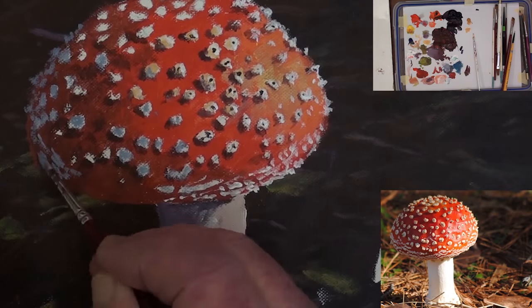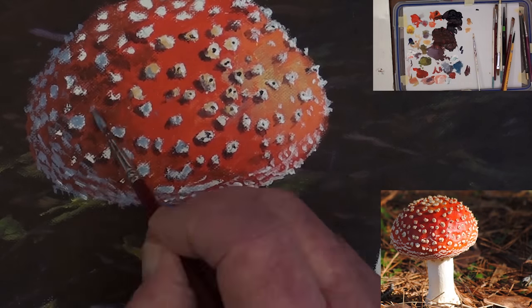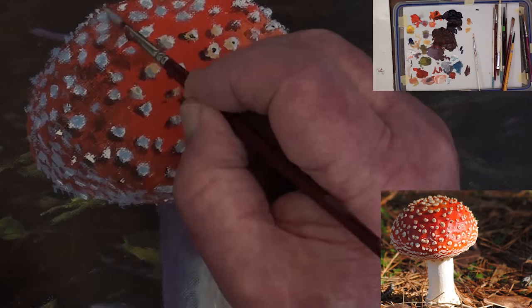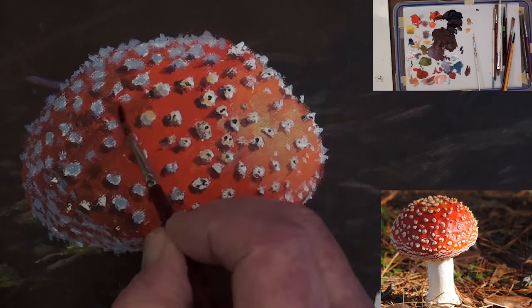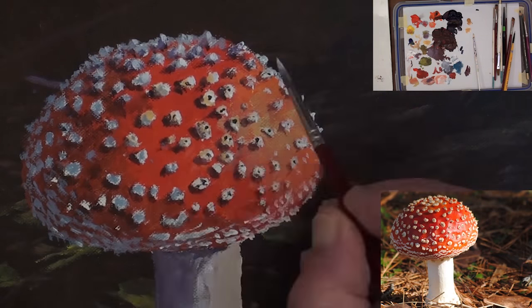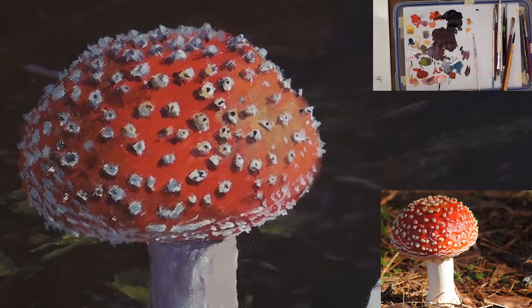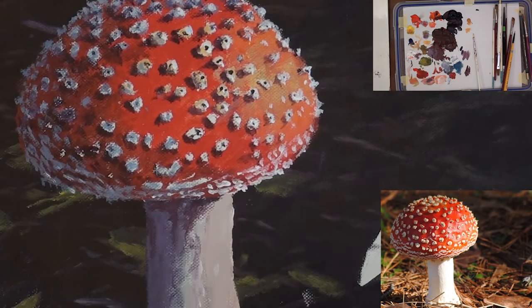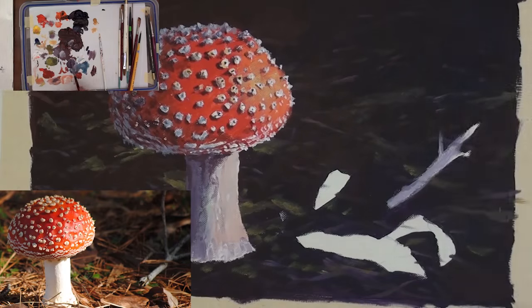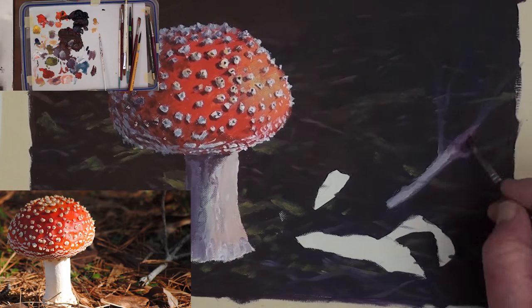Add the dark spots to the nodules. Continue doing the same to the left hand side keeping the shadow effect. Add the shadow at the top of the stem and the twig with the same color.